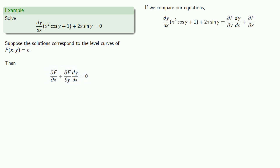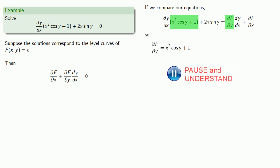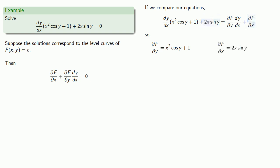If we compare our equations, we see dy/dx on both sides. On the left-hand side, it's multiplied by x squared cosine y plus 1; on the right, by the partial of f with respect to y. Since both sides are equal, the partial of f with respect to y must be x squared cosine y plus 1. Meanwhile, the leftover term — 2x sine y — must be the partial of f with respect to x.